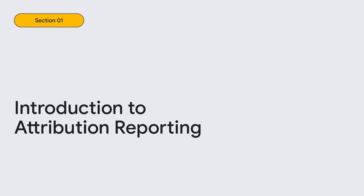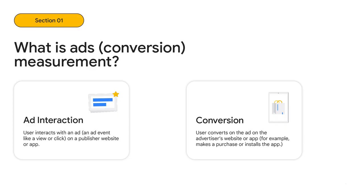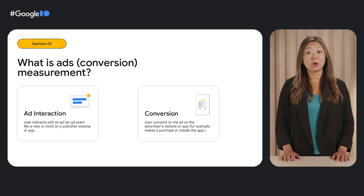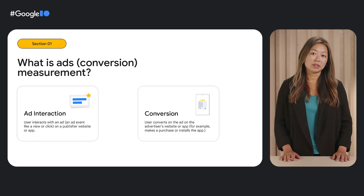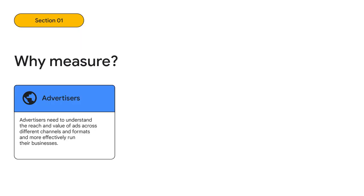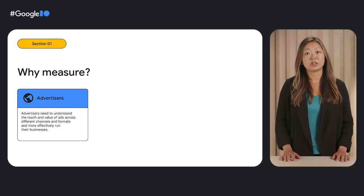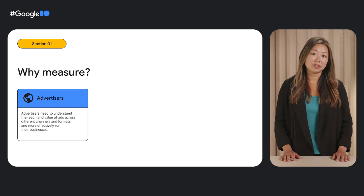Today, we'll do a deep dive on the Attribution Reporting API. The Attribution Reporting API is meant to enable conversion measurement. The goal of conversion measurement is to understand how much real-world value is being driven by interaction with ads. For example, if a user searches for a product and clicks on an ad, do they actually purchase the item? By joining ad interactions like clicks and views with conversions like purchases, we can measure the value of showing ads. This helps advertisers understand the return on investment for different types of ads to make better decisions about how to spend their advertising budget.